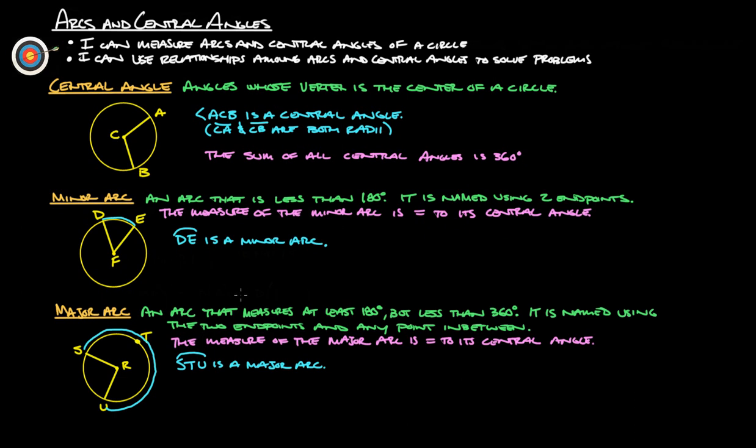A major arc is an arc that measures at least 180 degrees, but is less than 360 degrees. And it's named using the two endpoints and any point that's in between. So for example here, if we've got S to T to U, if I said SU, you would assume that it would be this length right here. But if I say STU, that gives you the direction that it's going, so this STU is a major arc.